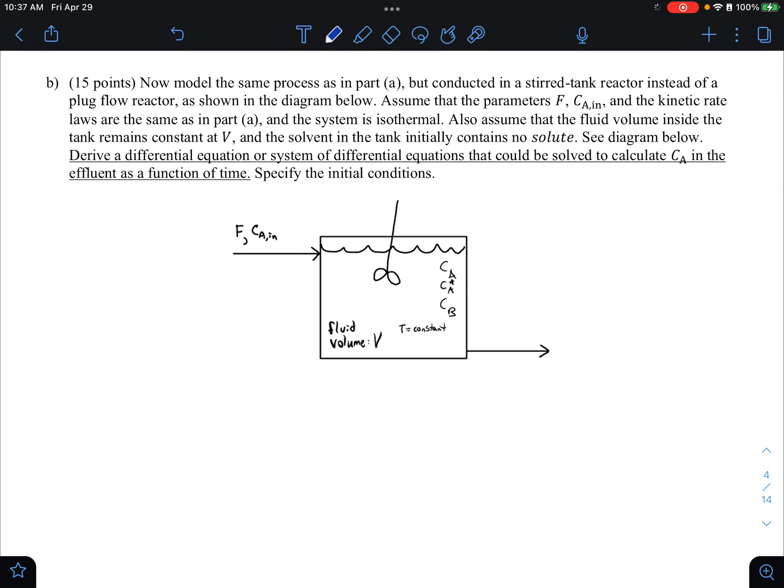So part B says, now model the system. Same process as in part A, but it's conducted in a stirred tank instead of a PFR. So the inputs look the same. So FCA in, the kinetic laws are the same as in part A. System is isothermal. The fluid volume inside the tank remains constant at V. That's this. And the tank initially contains no solute. I think that is going to be important because we're probably going to be asked to define the initial conditions.